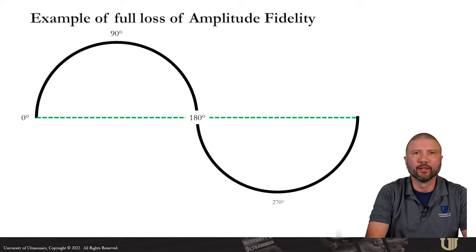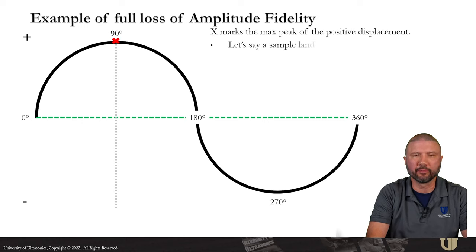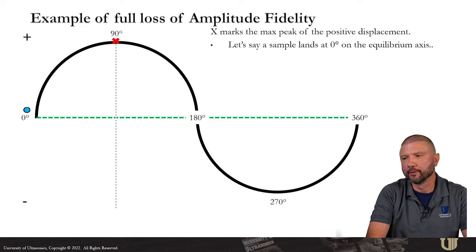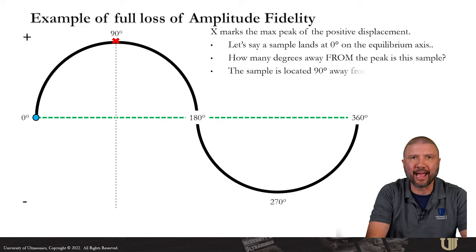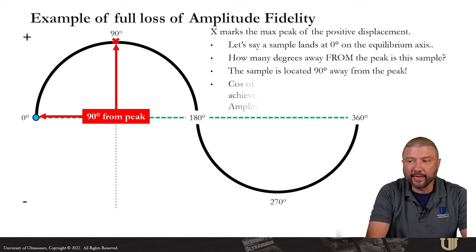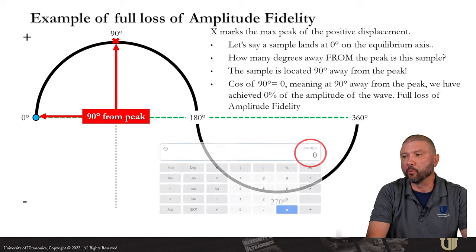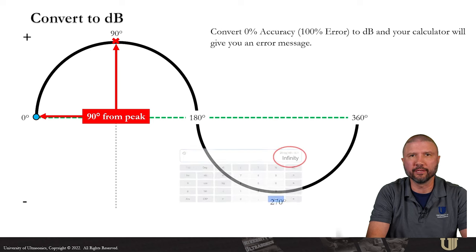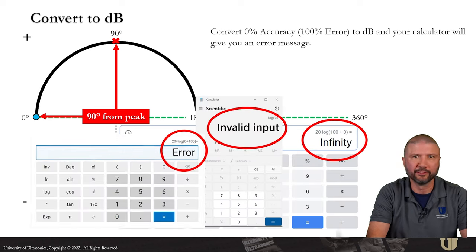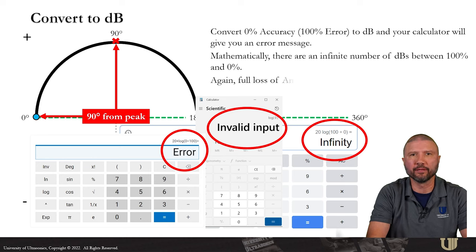Let's consider another scenario. Let's say that a sample lands at zero degrees on the equilibrium axis. How many degrees away from the peak would the sample be located? Well, we can show that the sample is located at 90 degrees away from the peak. Cosine of 90 is zero, meaning that at 90 degrees away from the peak, we have zero percent accuracy and 100% error. And if we try to convert zero percent accuracy to a dB, our calculator will show an error message. Because mathematically, there are an infinite number of dBs between 100% and zero percent. So let's say if this happens, we're going to probably have bad results.